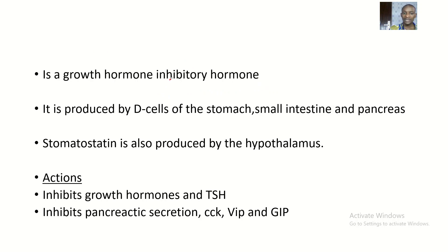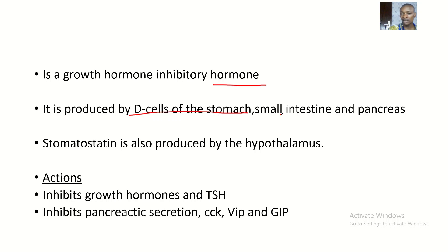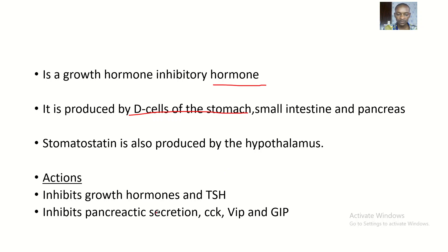Somatostatin is a growth hormone inhibitory hormone, and it is produced by D cells of the stomach, small intestine, and the pancreas. Somatostatin is also produced by the hypothalamus. Now, what are the actions of somatostatin?